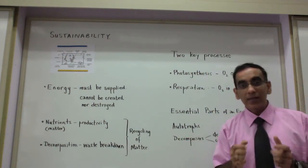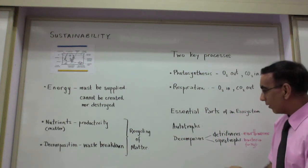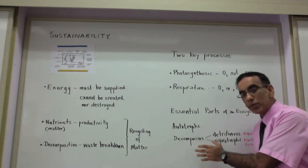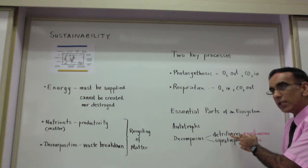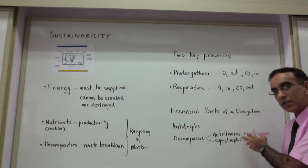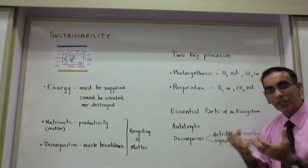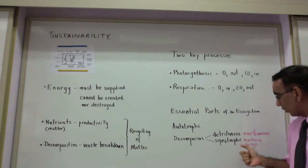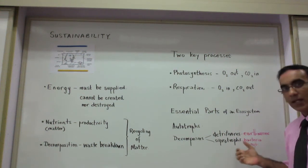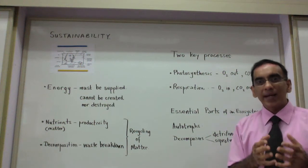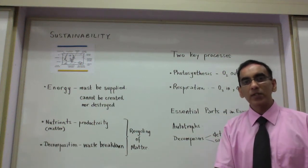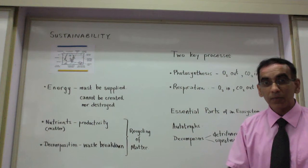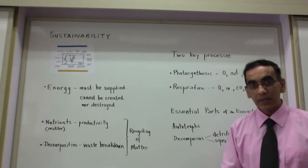And this key role is carried out by a host of decomposers. Whether those decomposers be detritivores, like earthworms that take in the material and digest it and process it and pass it out, or they can be bacteria and fungi, saprotrophs, which pass out digestive enzymes onto the substrate and digest the material outside of their bodies.